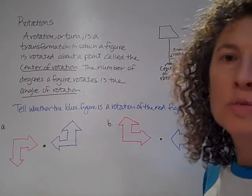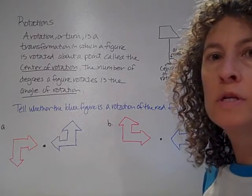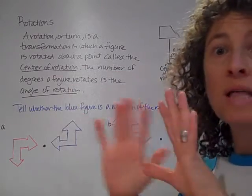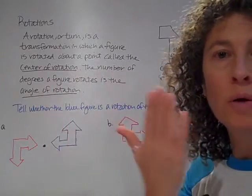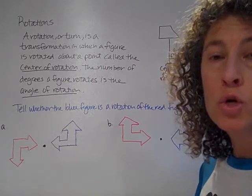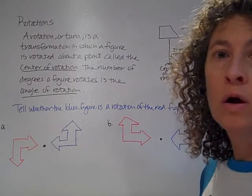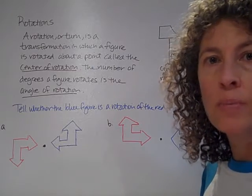Rotations. We've learned about a few different transformations. We've talked about translations, which is a slide. We've talked about reflections, which if we think about, we're in our mirror. And both of those transformations create new images that are congruent to the original shape.